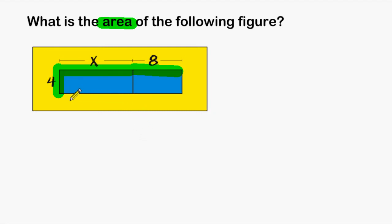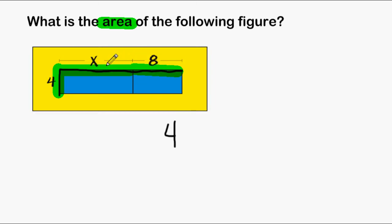What we do know is that we can multiply the length times the width of any rectangle to find the area. So we can visualize this entire figure as one whole rectangle. So we can say that the length is 4, and we have to multiply that by the width. We are going to look at the width as the distance from the beginning all the way to the end, so we have to combine x and 8 — x plus 8 would be the width of that entire rectangle.